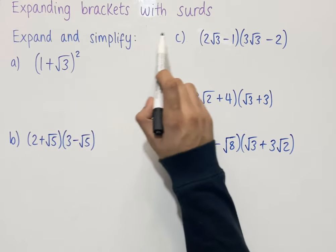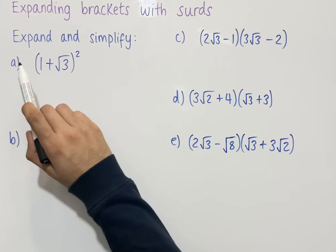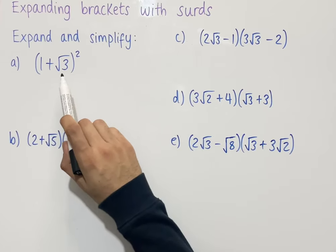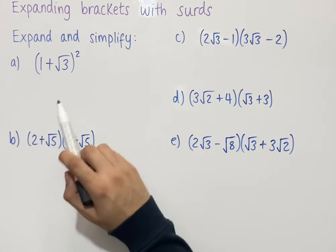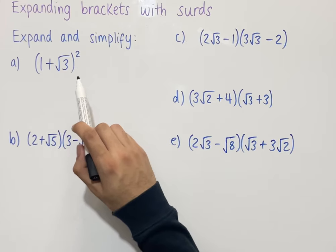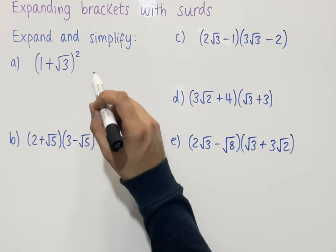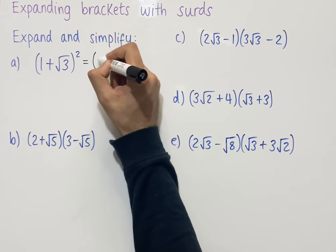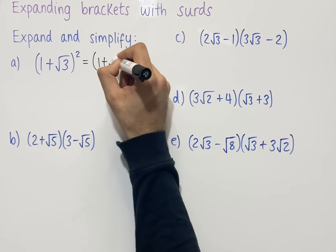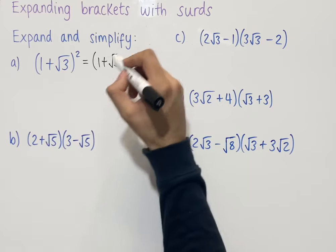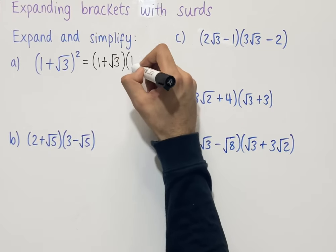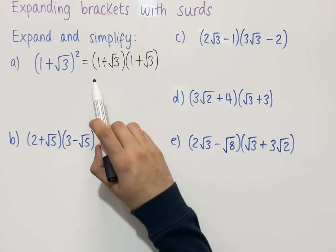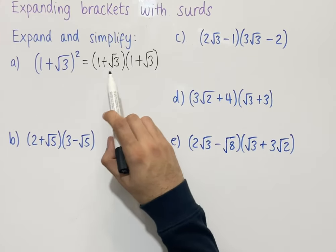Let's look at expanding brackets with surds. The question says expand and simplify 1 plus square root of 3, all squared. When we have a squared bracket, we can write this as two separate brackets: 1 plus root 3 multiplied by 1 plus root 3. Now we can use the FOIL method to expand the brackets.